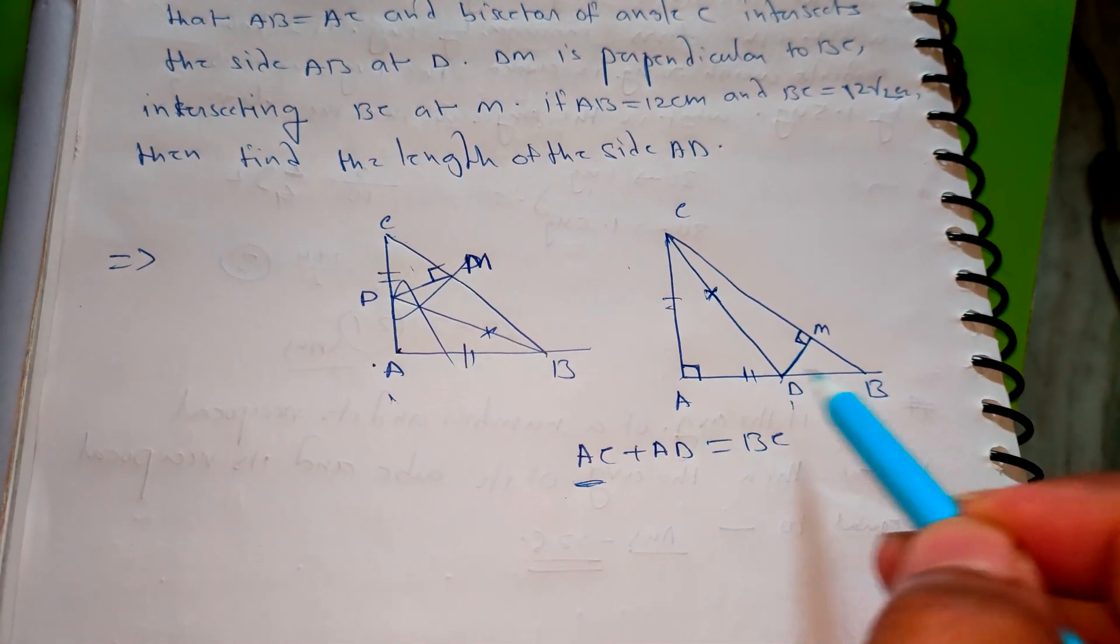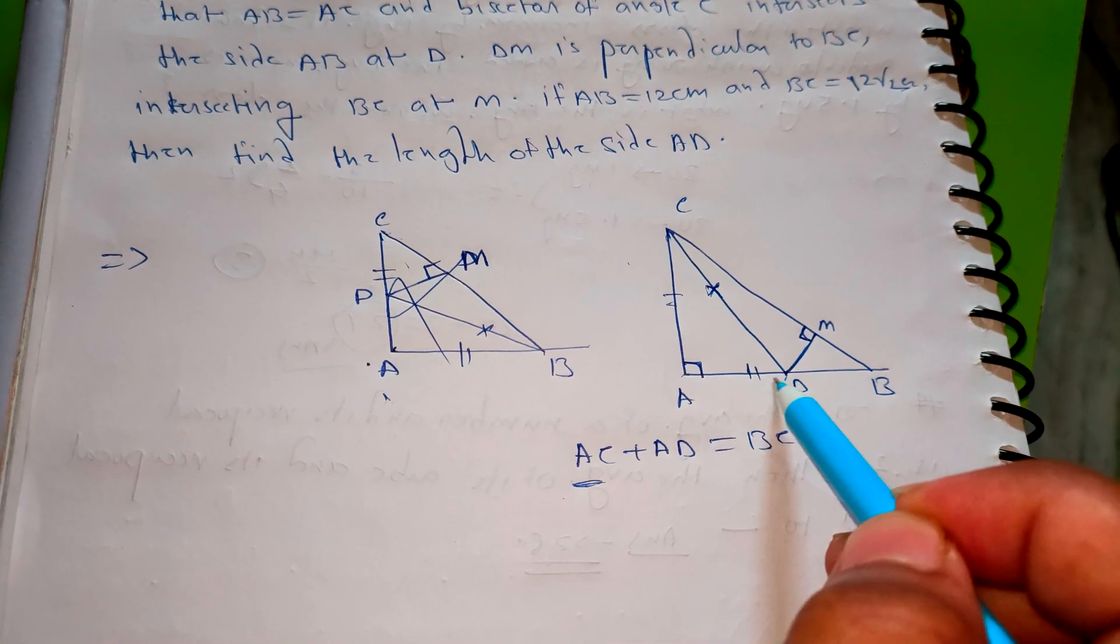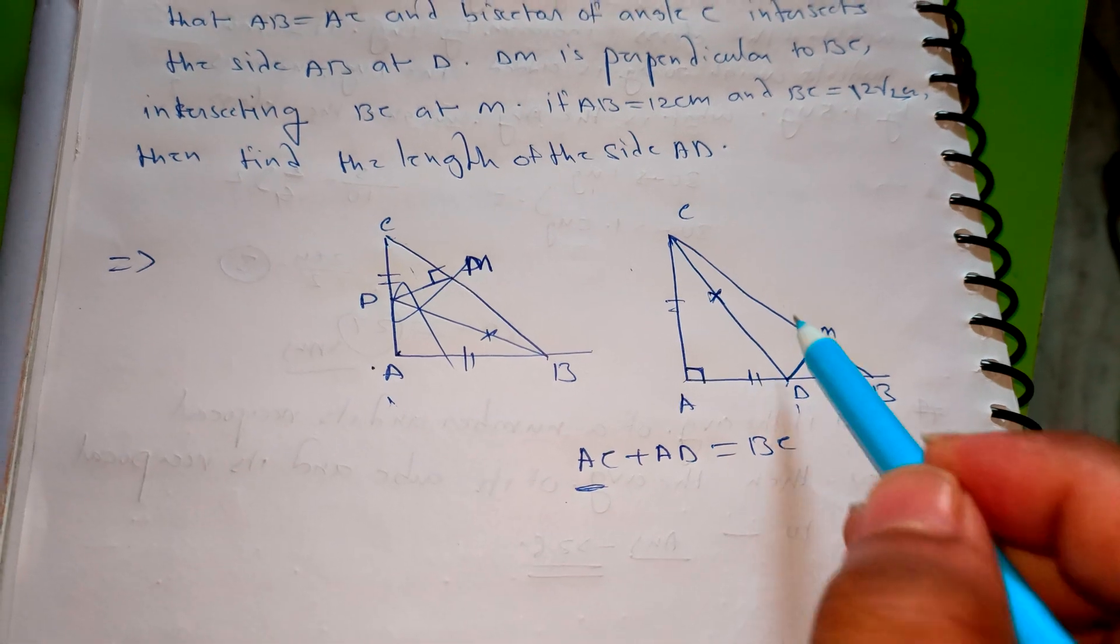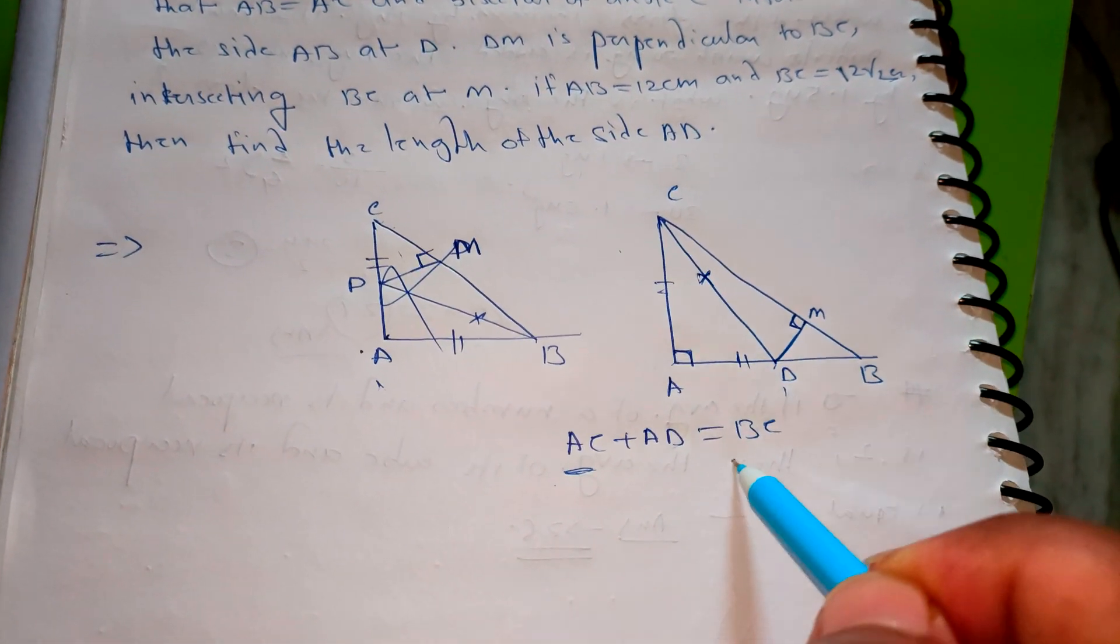It intersects the other side. Take this part as AB, so AD, and the hypotenuse is taken as BC.